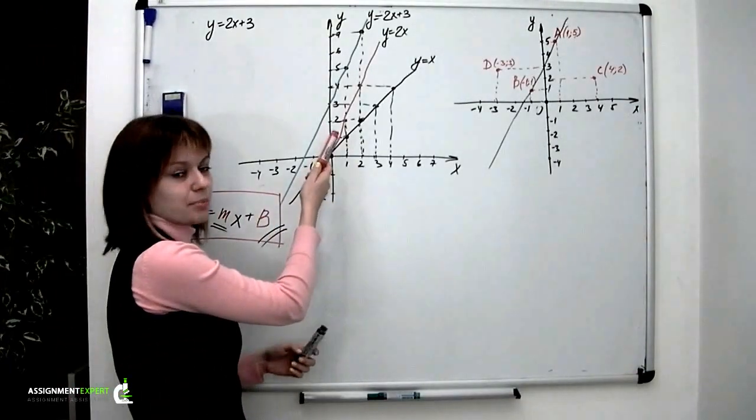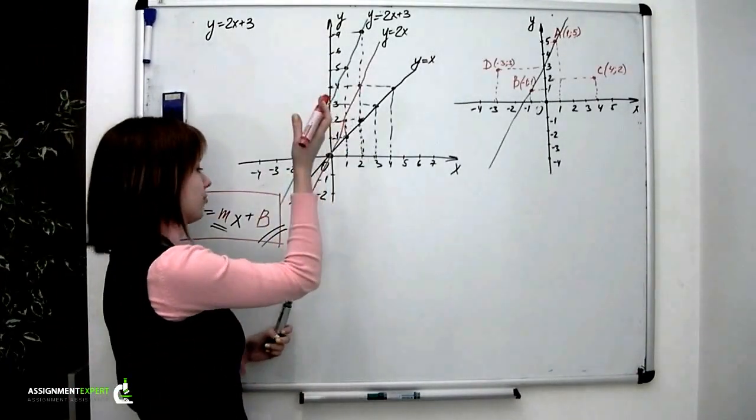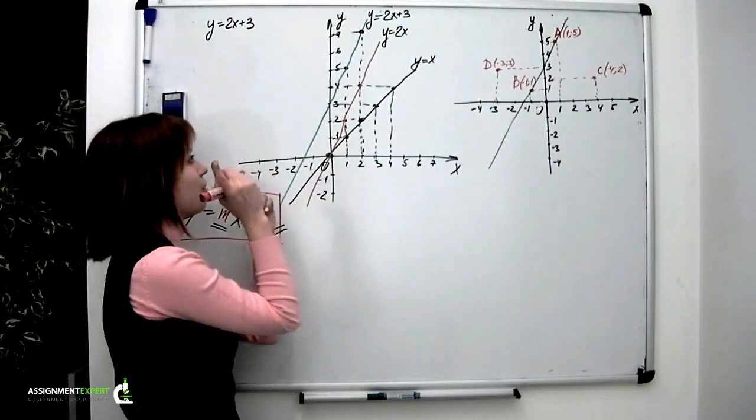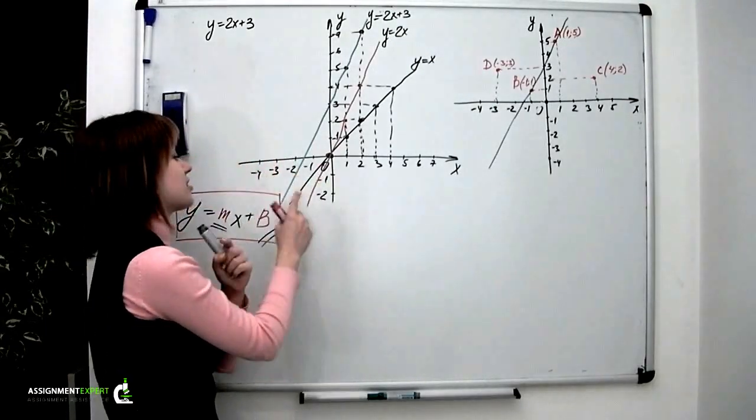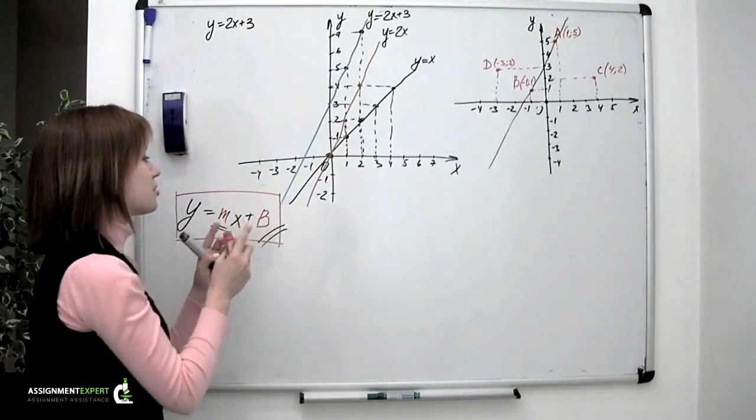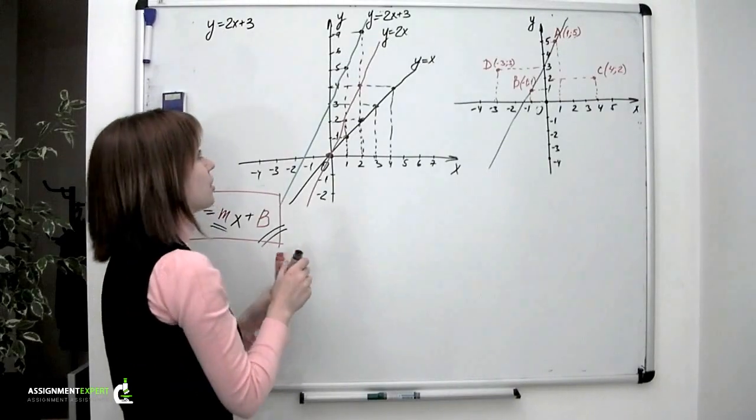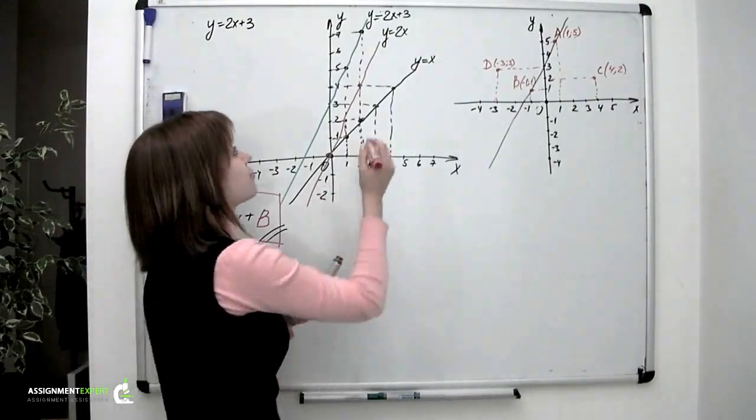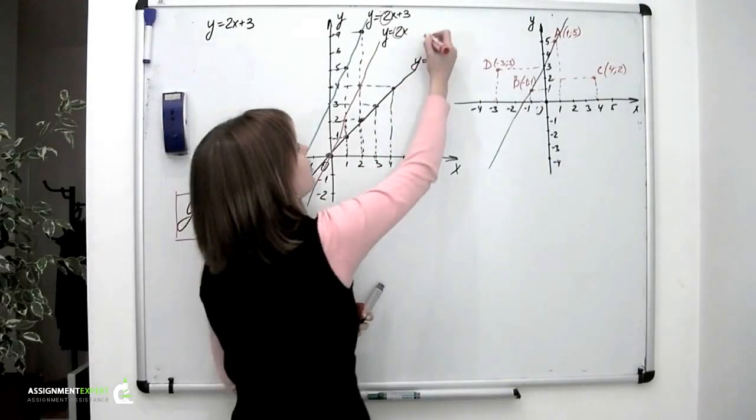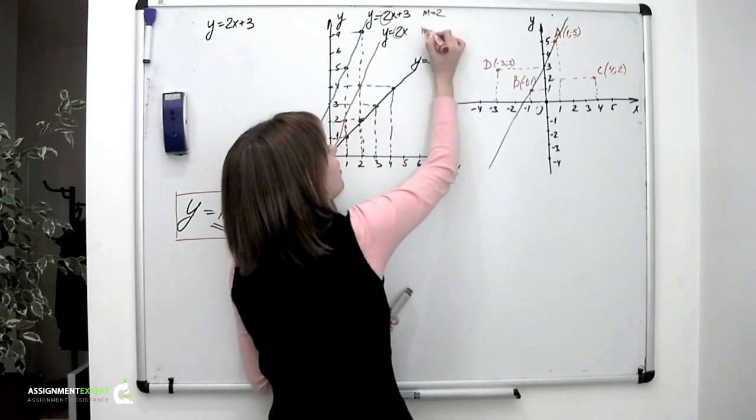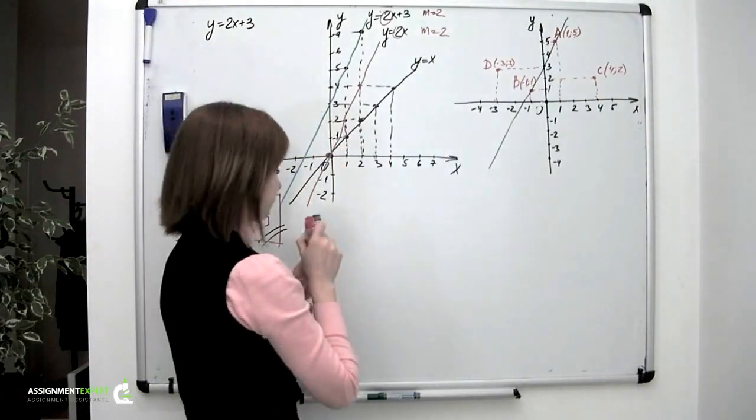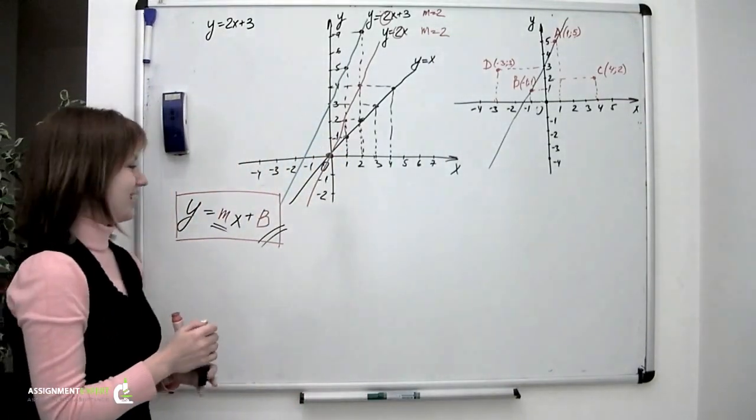Now, let's have a look at our previous examples. The lines, the colored lines - the green one and the red one - were of the same steepness, and this now seems even more natural because we can see that they have the same slopes. Right here, m equals 2, and the same situation here.